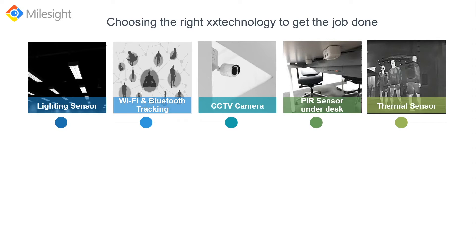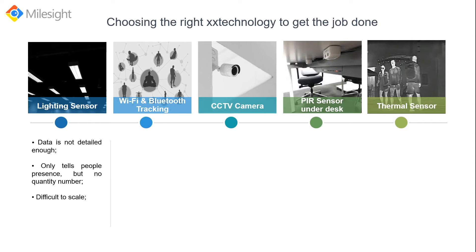Here are the most popular technologies used for occupancy detection — their prices vary greatly according to different vendors. The lighting sensor can capture data only when sensors are triggered to put lighting on, meaning energy saving, but the data is not detailed enough. It tells you people are in that area, but not how many. And it's very complicated to add more sensors or install a new lighting system for future business expansion.